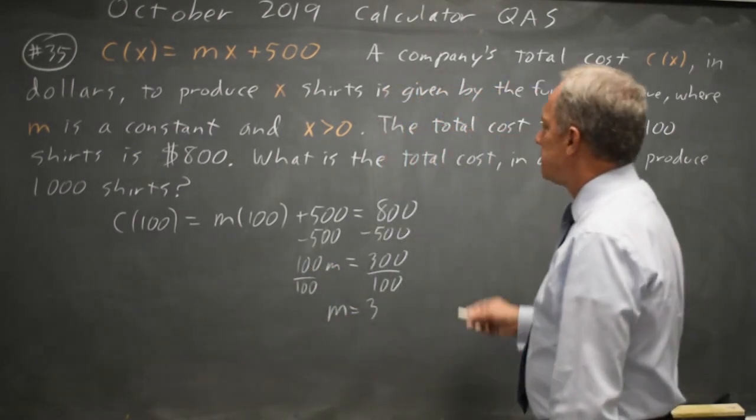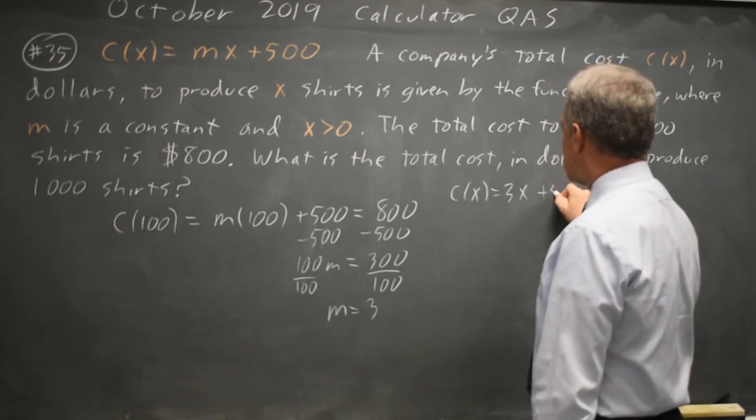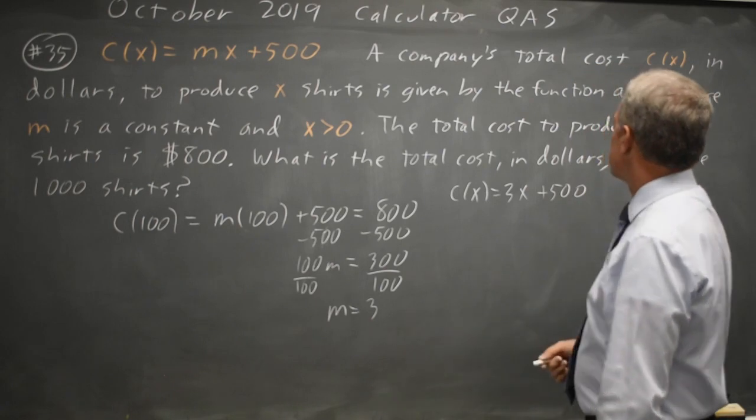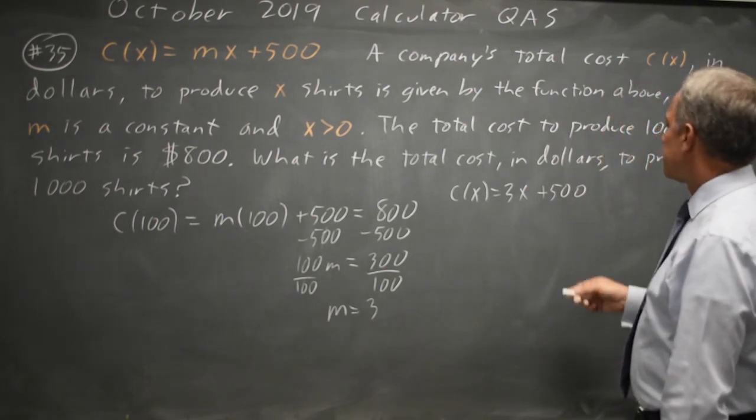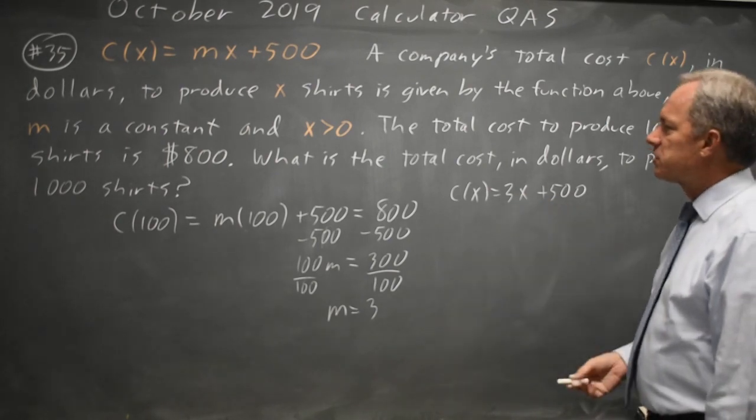So, our equation c of x equals 3x plus 500. And checking that I did that right, 3 times 100 is 300 plus 500 is 800. So, that works.